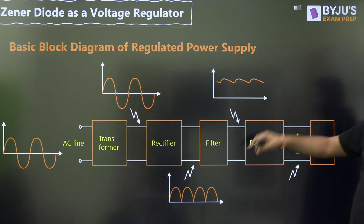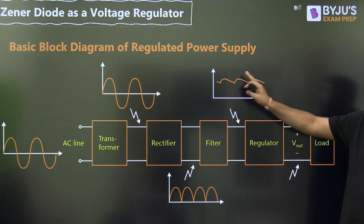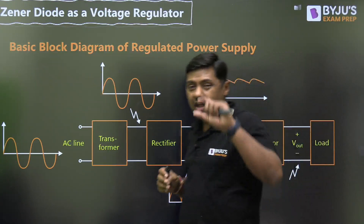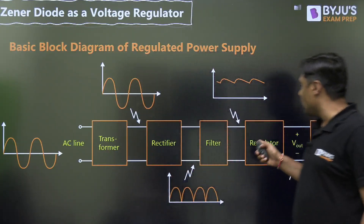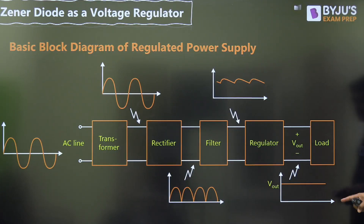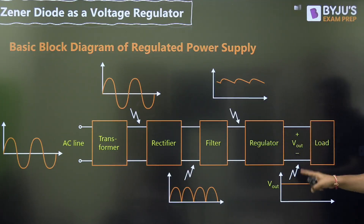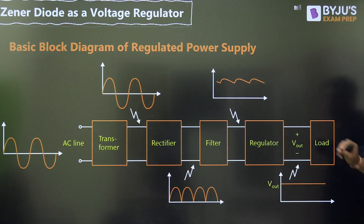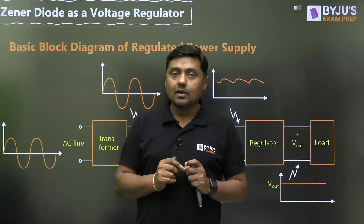The variation in the signal before the filter is very high, but after the filter it is very low — however it is still not pure DC; there is some fluctuation. We then pass this signal through the voltage regulator, which converts it into a pure DC signal. The input to the voltage regulator is called unregulated voltage and the output is called regulated voltage, which is then given to the load.